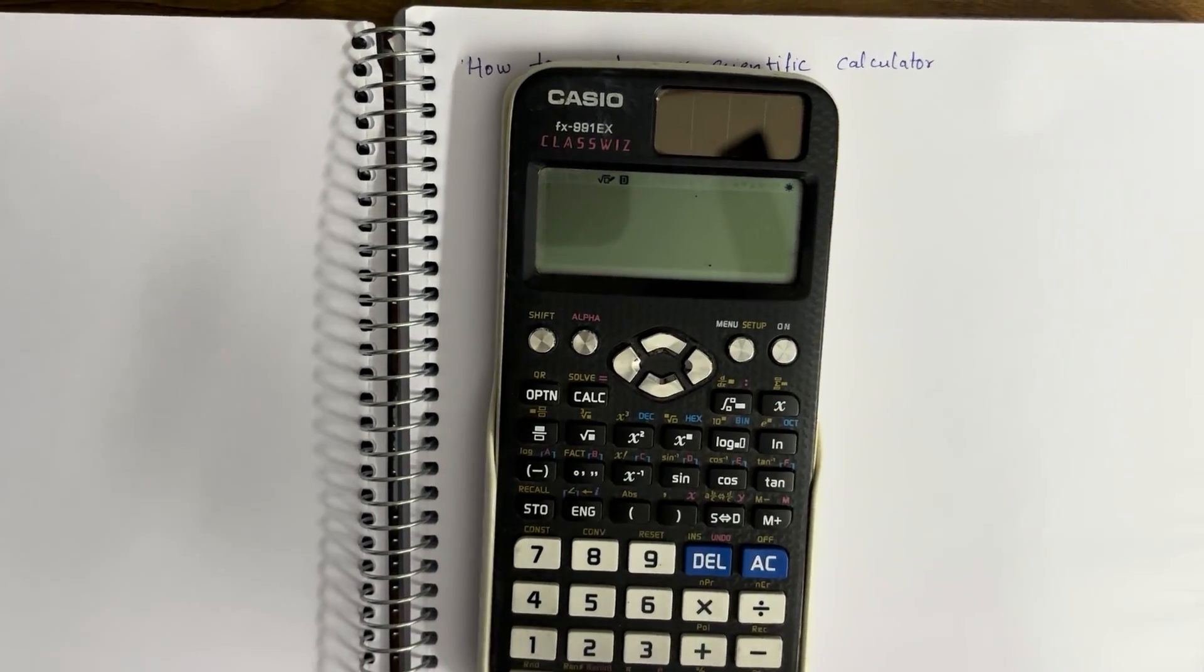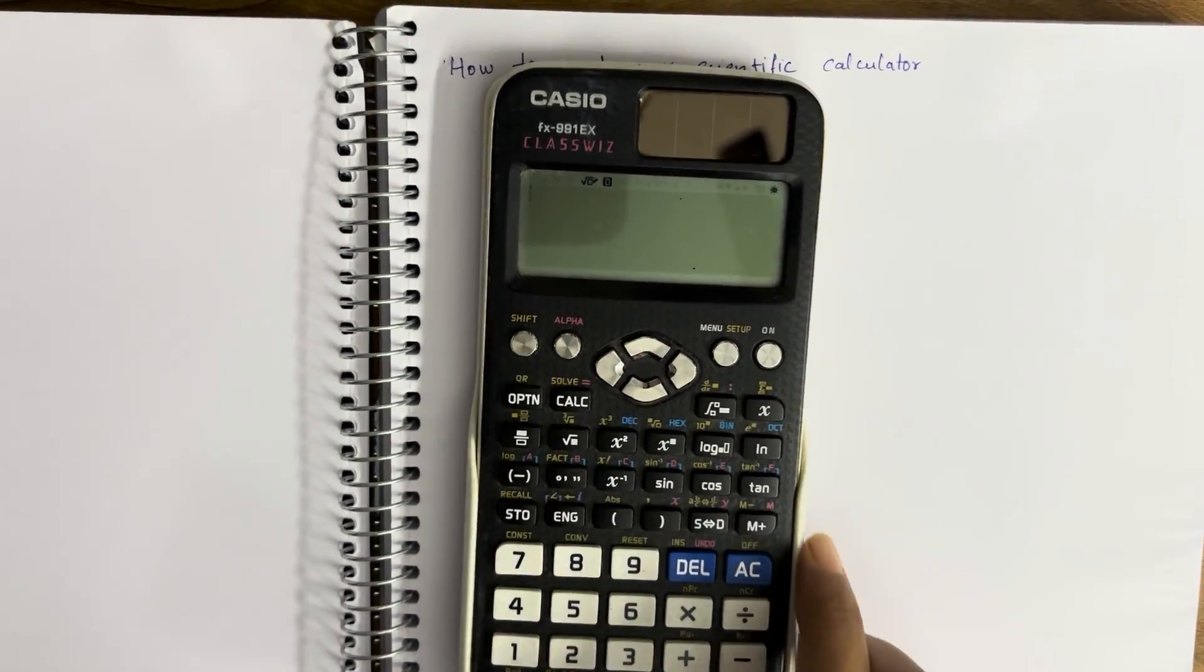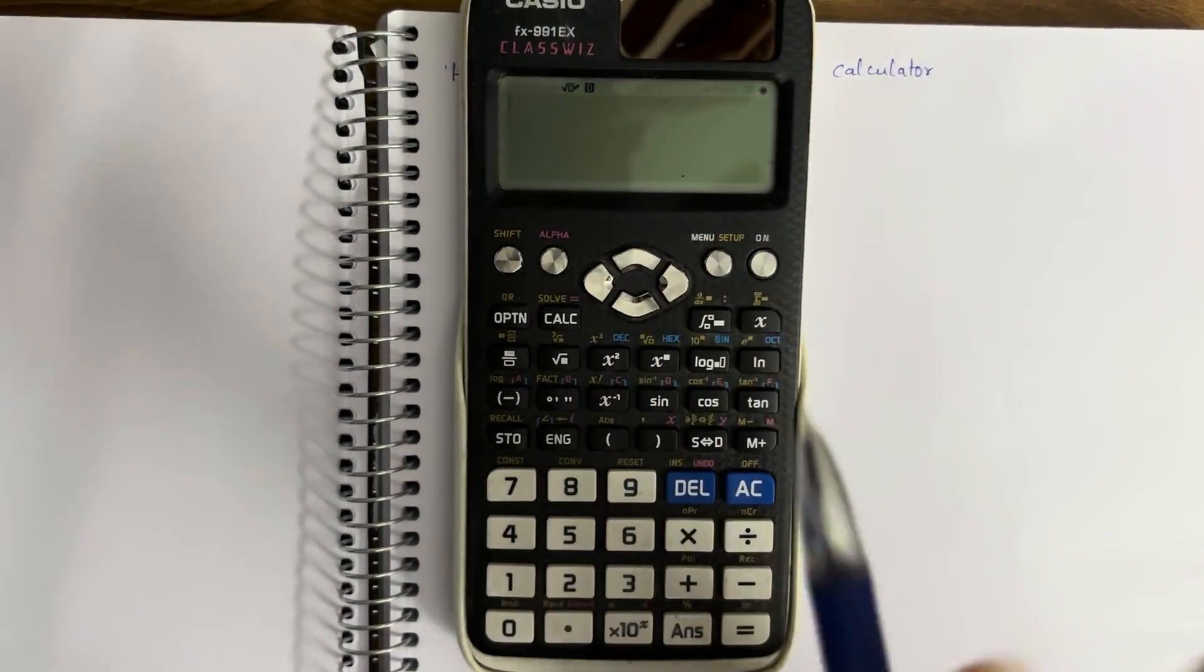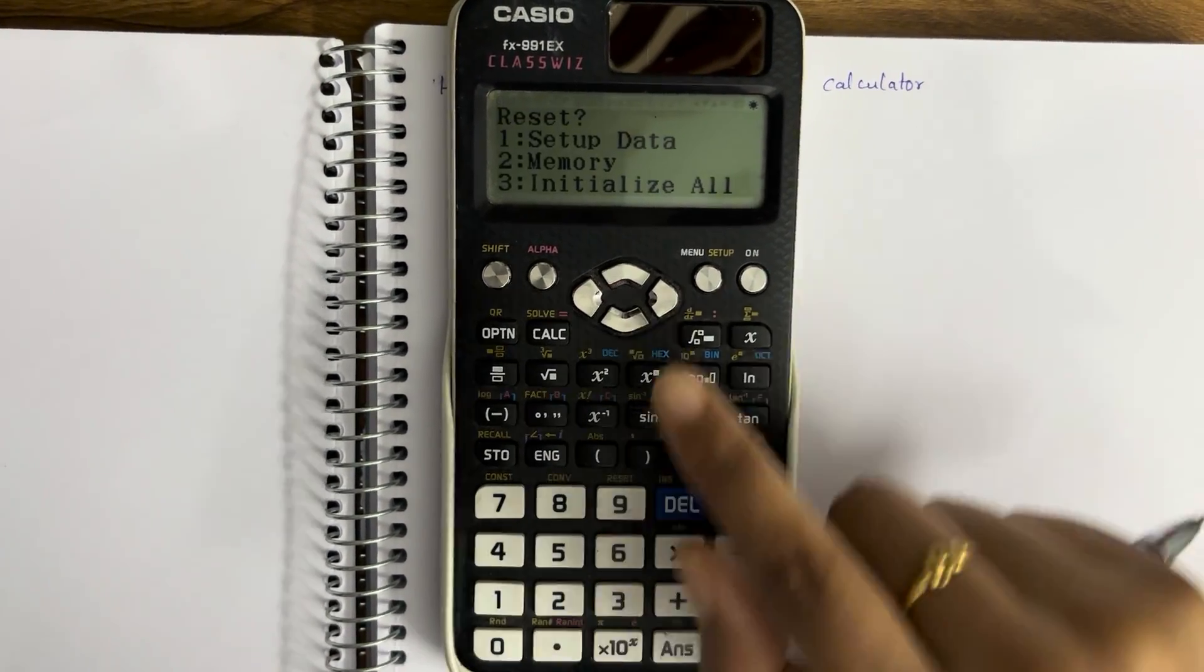Go to shift, then mode. You can see a reset option 9. To access it, first go to shift, then press reset.